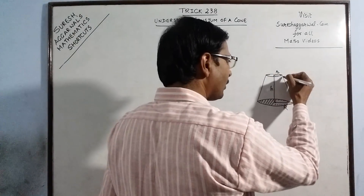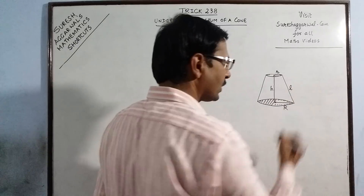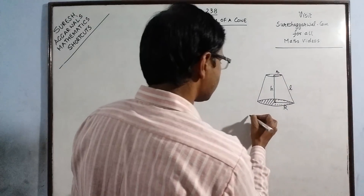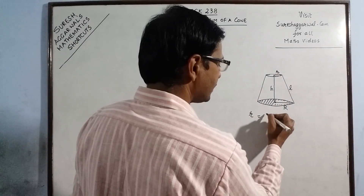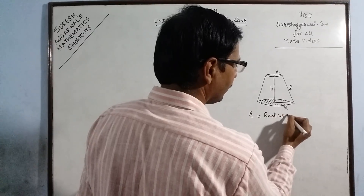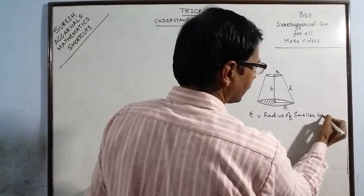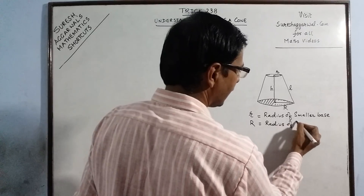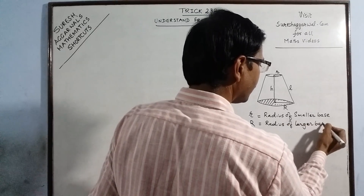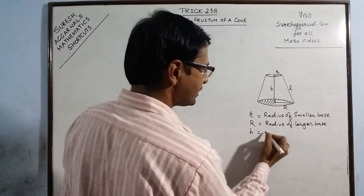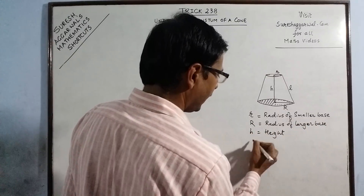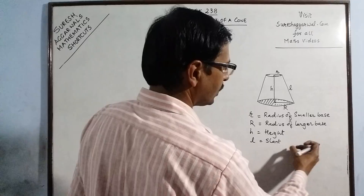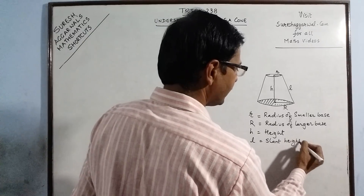The outer side of the frustum is known as the slant height of the frustum. So we have four dimensions in a frustum: small r, the radius of the smaller base; capital R, the radius of the larger base; h, the height of the frustum; and L, the slant height of the frustum.